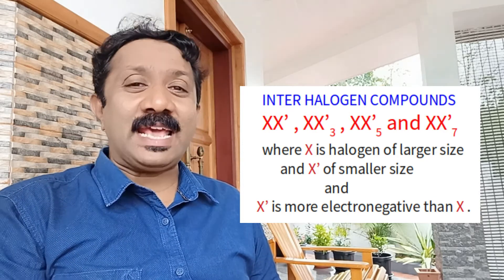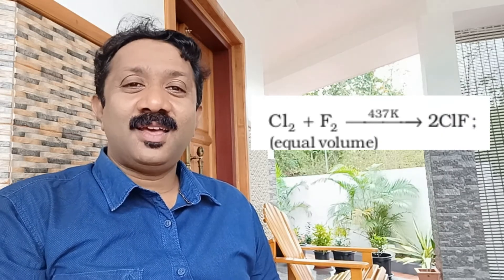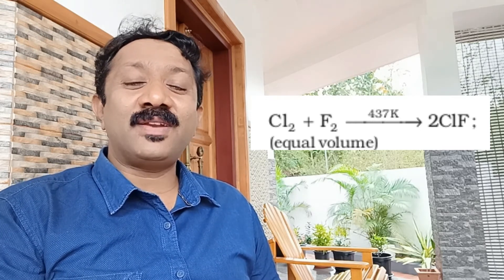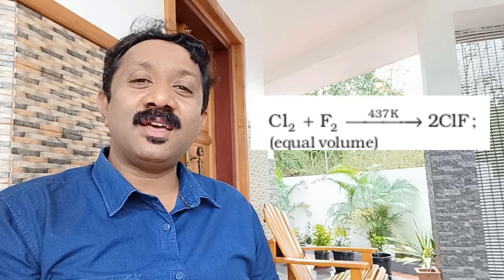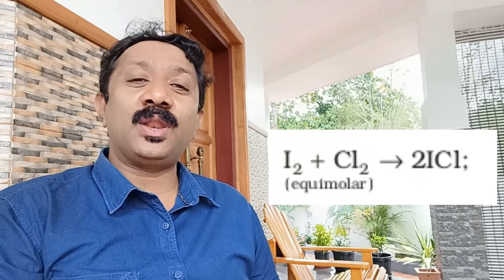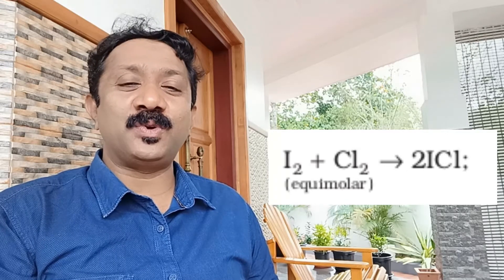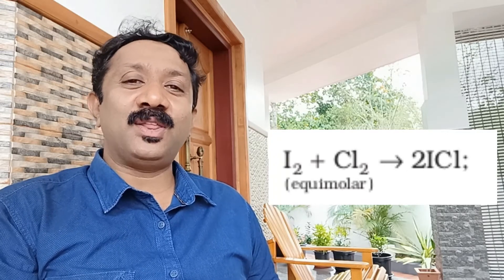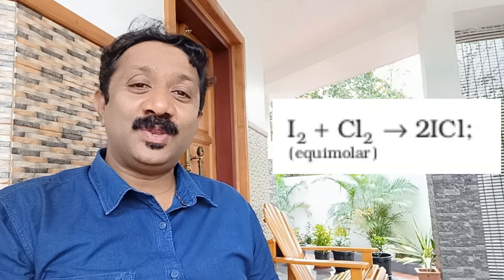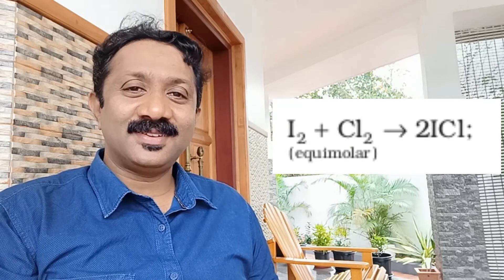You get me? Yes, you can provide examples also. Type example on ClF — interhalogen compound. Equimolar mixture of chlorine and fluorine at 347°C gives ClF. ICl is also an interhalogen compound. Preparation: Cl2 plus F2 gives 2ClF; I2 plus Cl2 gives 2ICl. Clear? Yes.